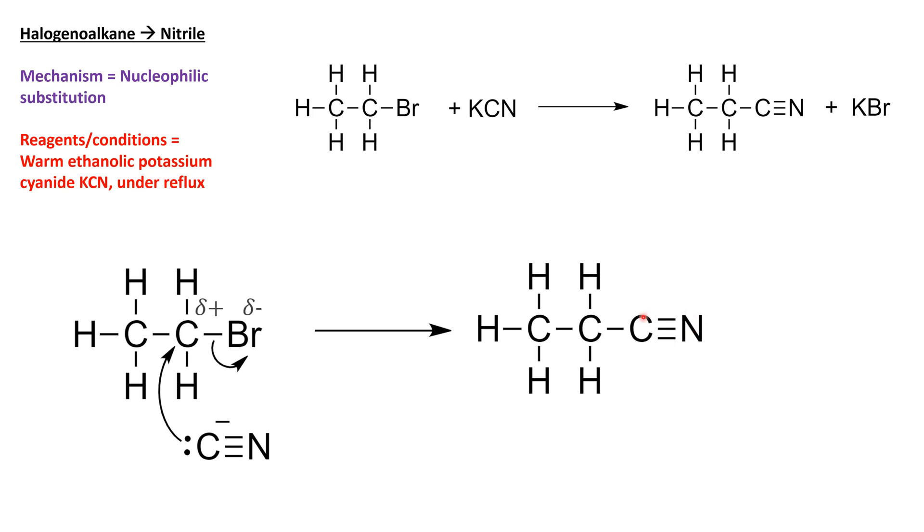You can now see we've got the nitrile group on here. Because we use KCN and the Br's come off, we're going to get potassium bromide as our byproduct. Let's have a look at our next one.